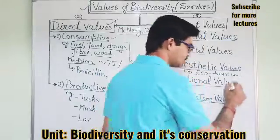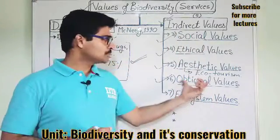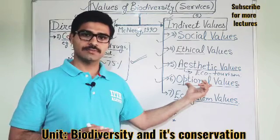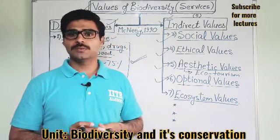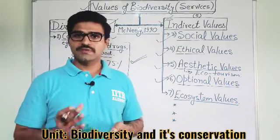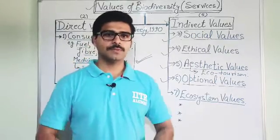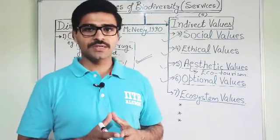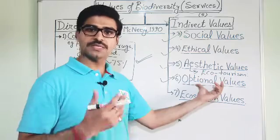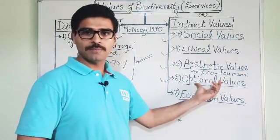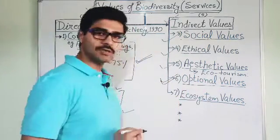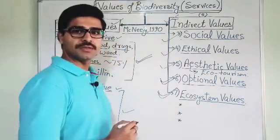Next is optional values. Optional values of biodiversity means the values which are till date unexplored. There are many species that we don't know yet. For example, different marine animals are believed to possess anti-cancerous properties. So in future, there is the possibility that we will find different plant species and animal species which are yet to be explored for beneficial products. So this is all about optional values.